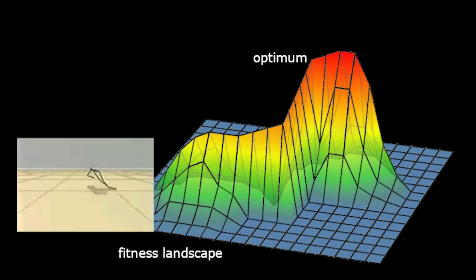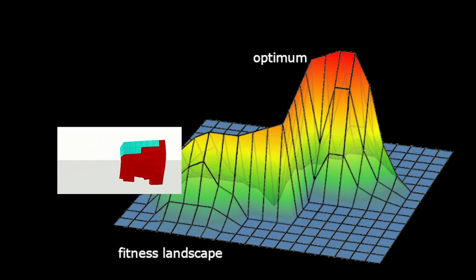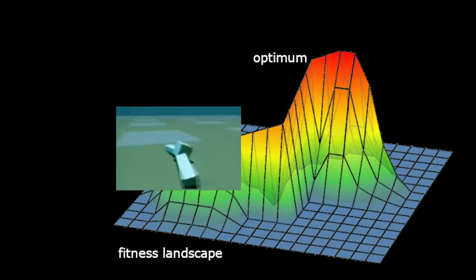The goal with evolutionary algorithms has always been about optimization. The very word optimal implies one optimum, one solution. When evolving virtual creatures, this is not an issue. In fact, that's often the goal.